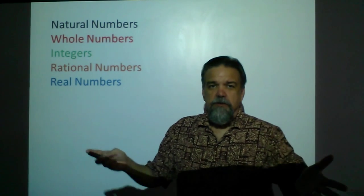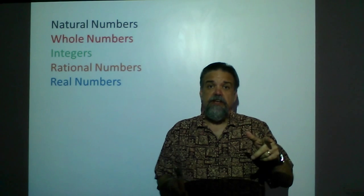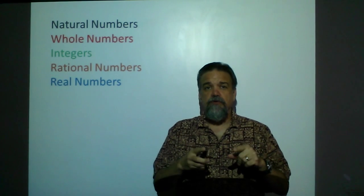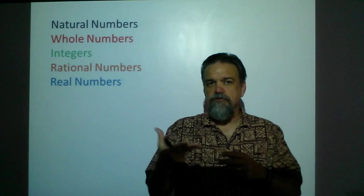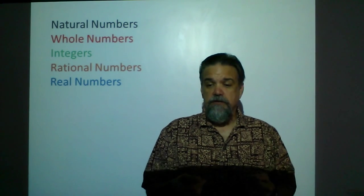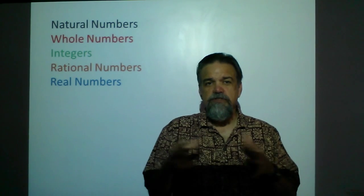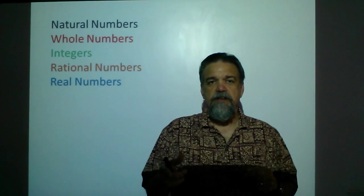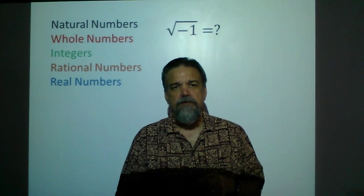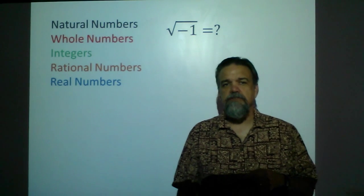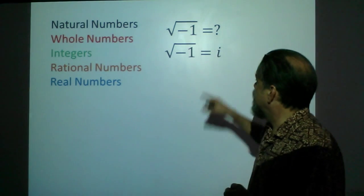So now we can do pretty much anything we want to. There are two main things we still can't do with real numbers: you still can't divide by zero, and you still can't take the square root of a negative number. Think about it — if you square a negative number you get positive, square a positive you get positive, square zero you get zero. There's no type of real number you can square to get a negative number. So in order to come up with the idea of the square root of negative one, we have to again expand our idea of what a number is, and we call that number i.